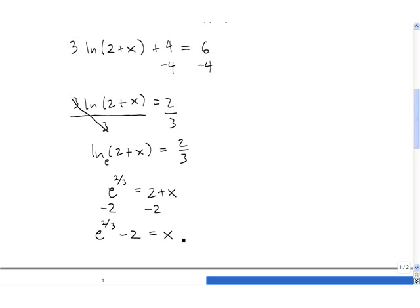Once again we should check to make sure this is not an extraneous solution. So we need to plug in e^(2/3) minus 2 for this x in the original equation. So we have 3 times the natural log of 2 plus x. So 2 plus e^(2/3) minus 2 plus 4 equals 6 with a question mark, because we don't know it's equal, we're checking it.